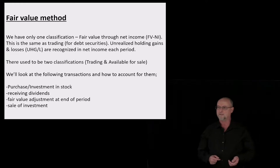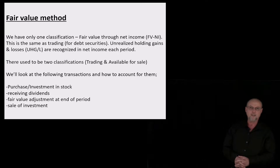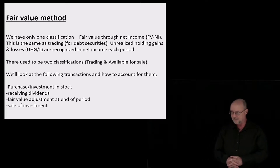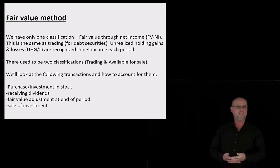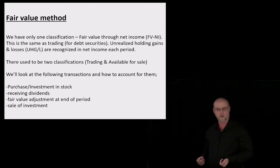Unrealized holding gains and losses are recognized in net income for each period. We're going to look at the following transactions and their related journal entries: when we invest, when we receive dividends, we're going to do a fair value adjustment at the end of each period, and then when we sell the investment. These are relatively straightforward journal entries.